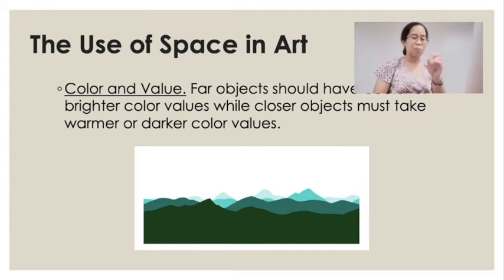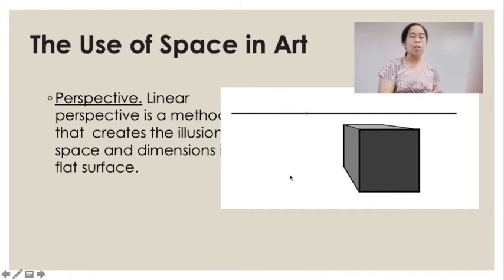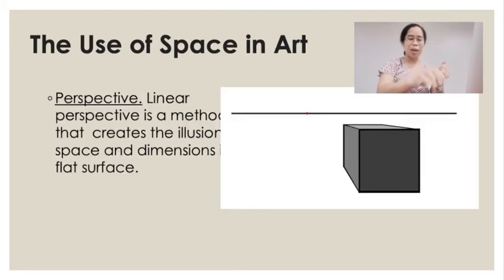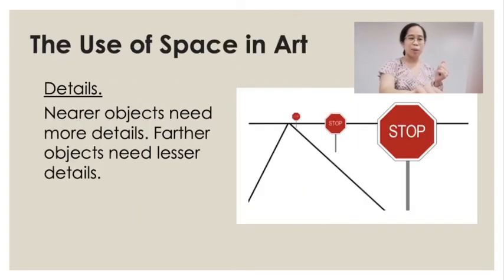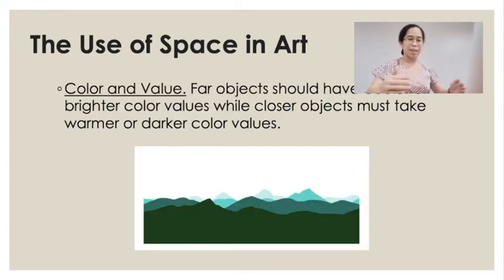We also have perspective. The linear perspective is a method that creates the illusion of space and dimensions on a flat surface. Looking at the example on screen, the linear perspective goes farther and creates that illusion. When near, it's bigger, and when farther, it's smaller — it creates that illusion of depth.